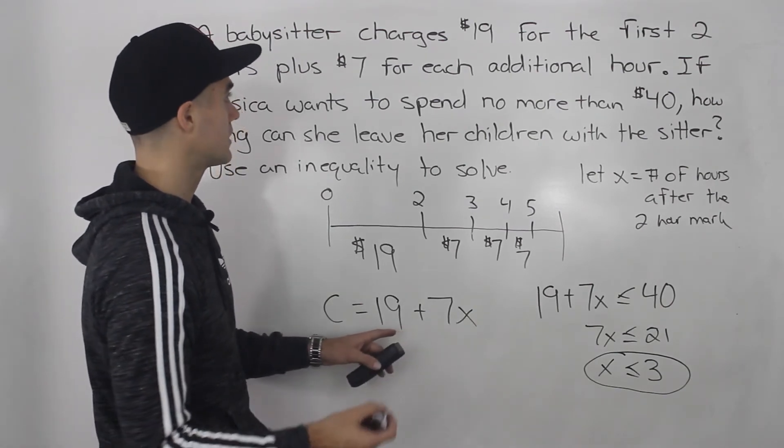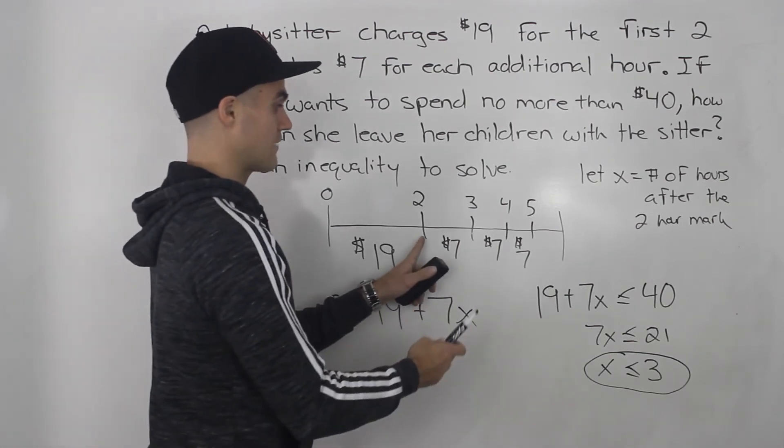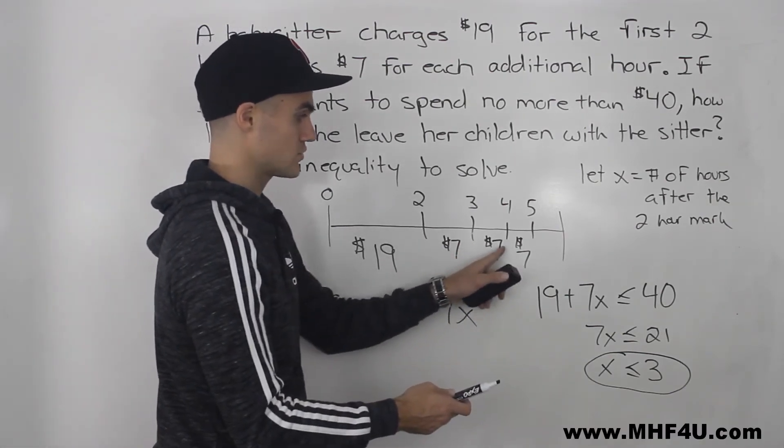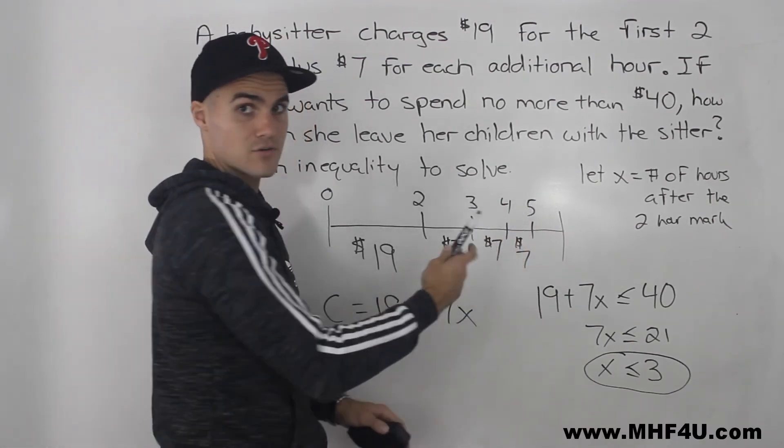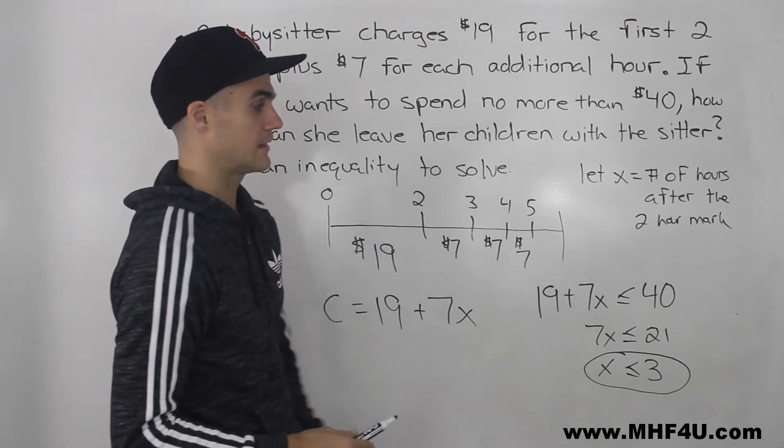Jessica can only leave her child with the babysitter three hours after that two hour mark, so one, two, three. So five hours in total or less in order for her charge to be less than 40.